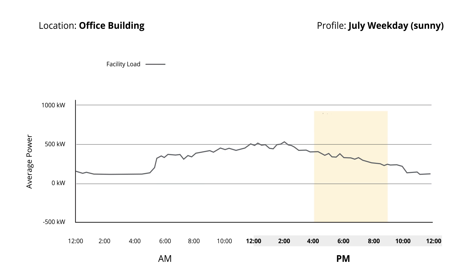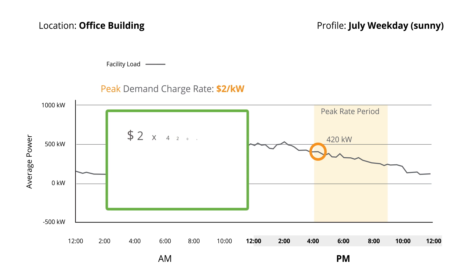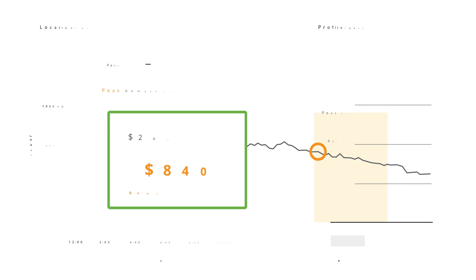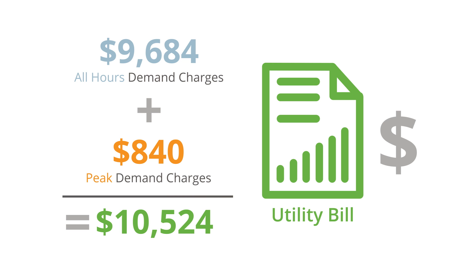But there's a time of use factor here as well. The peak period for this particular utility rate structure is from 4 p.m. to 9 p.m. in the evening, and the highest average power usage within that timeframe occurs around 4:30 p.m. and is 420 kilowatts. With a peak demand charge rate of $2 per kilowatt, peak demand charges amount to an additional $840 per billing cycle. So the total demand charges would equal $10,524 in the month of July.